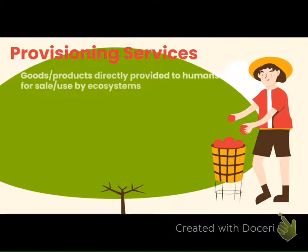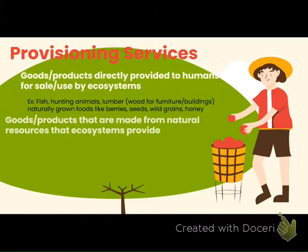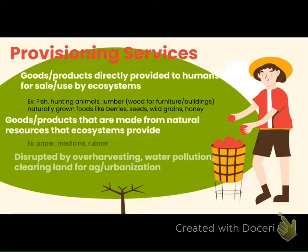Provisioning services basically means how goods are provided to humans — for example, if we hunt, fish, or cut down wood, we can use those things for our own good. Sometimes these come from natural resources that ecosystems provide, such as paper and medicine. Did you know the vast majority of our medicines come from trees? For example, aspirin originated from the bark of a willow tree.